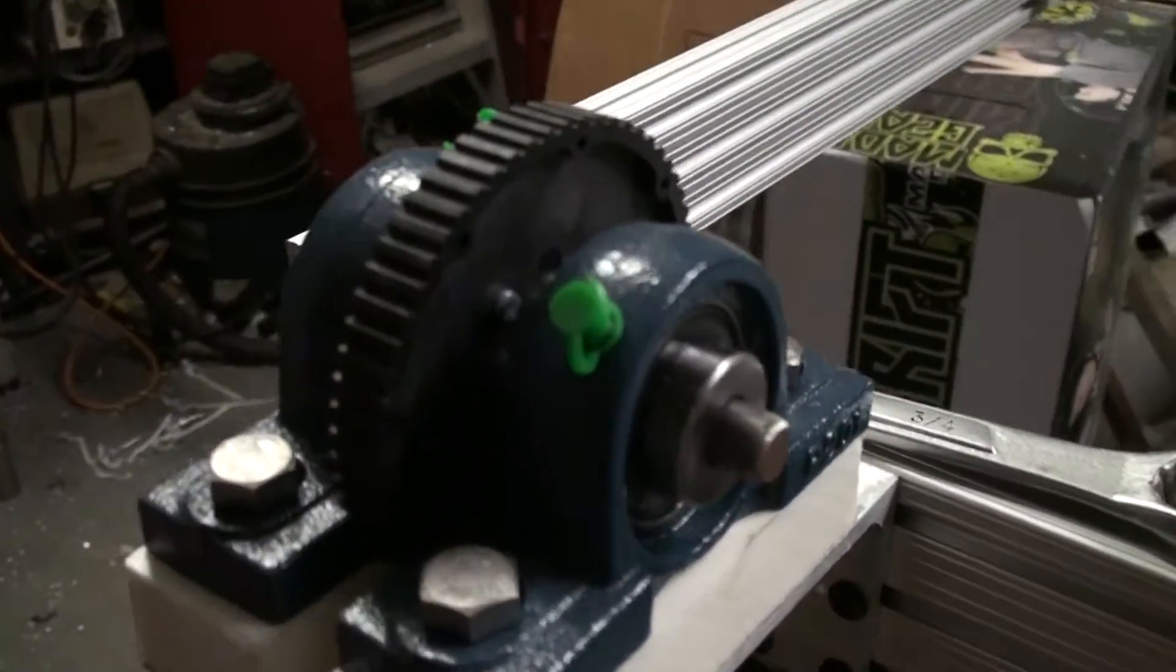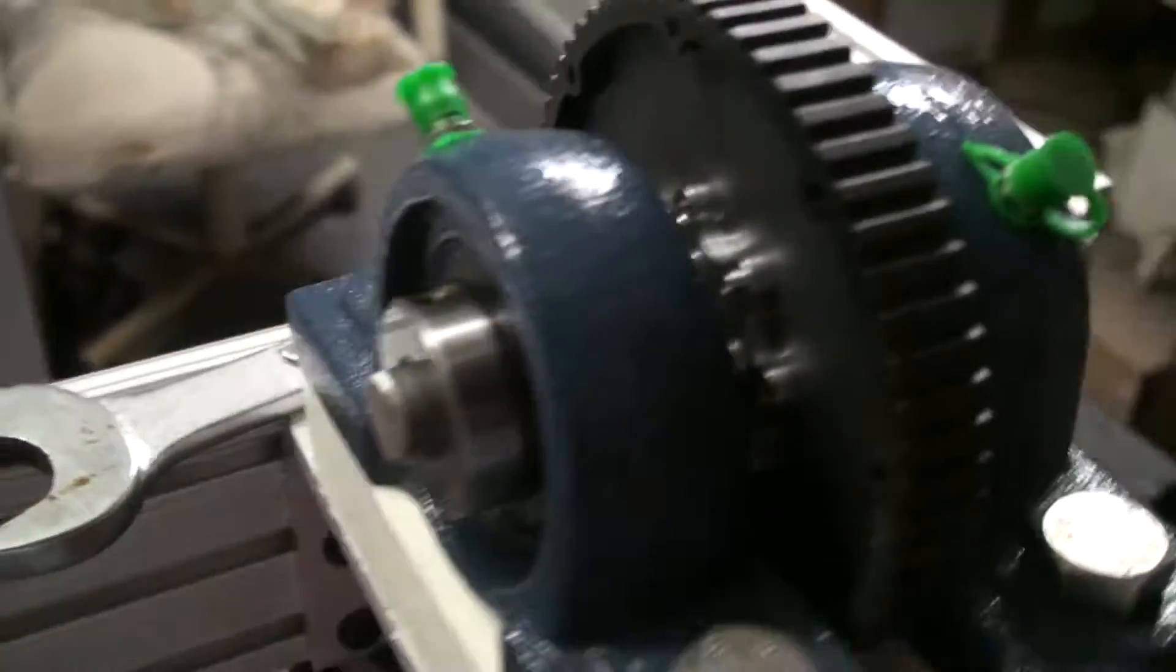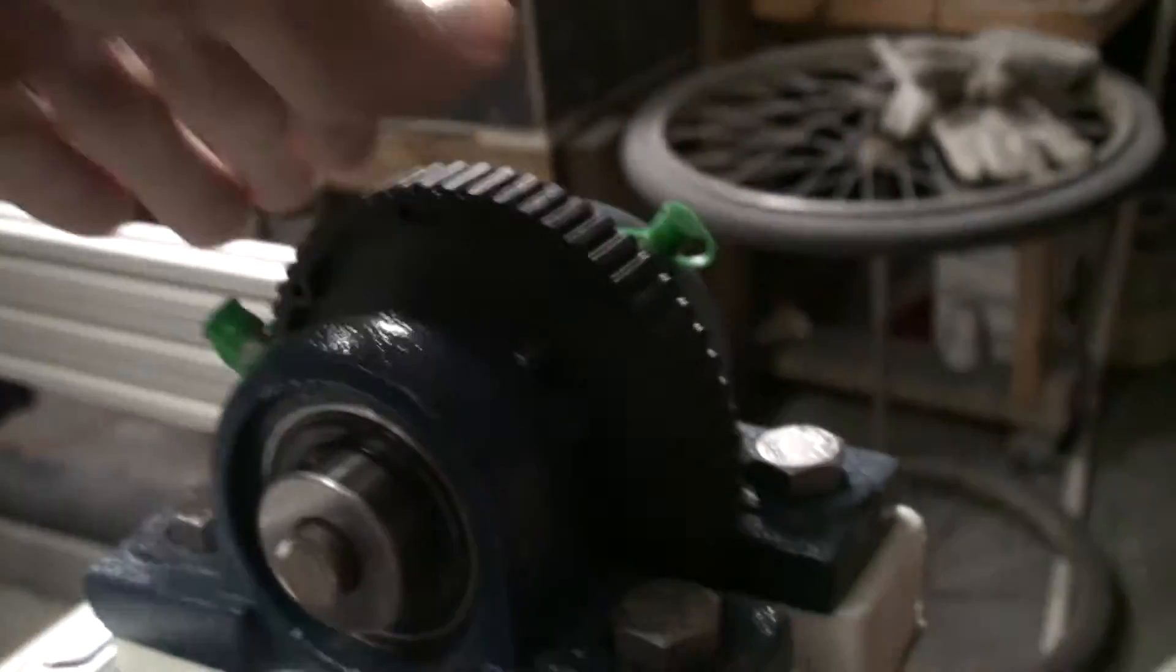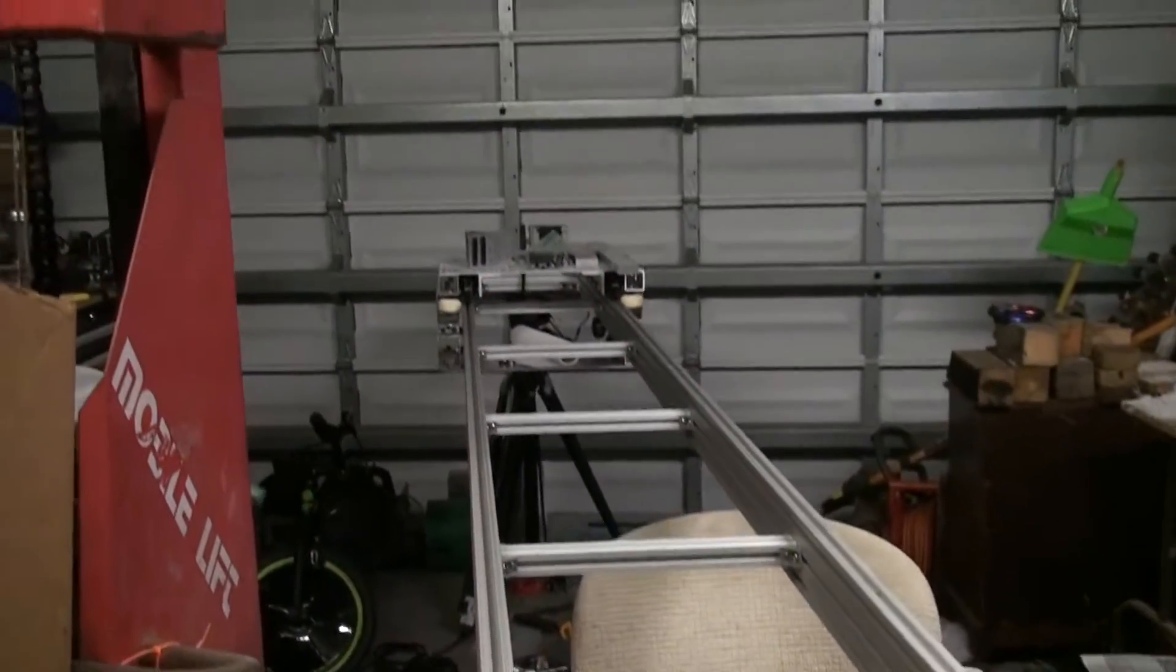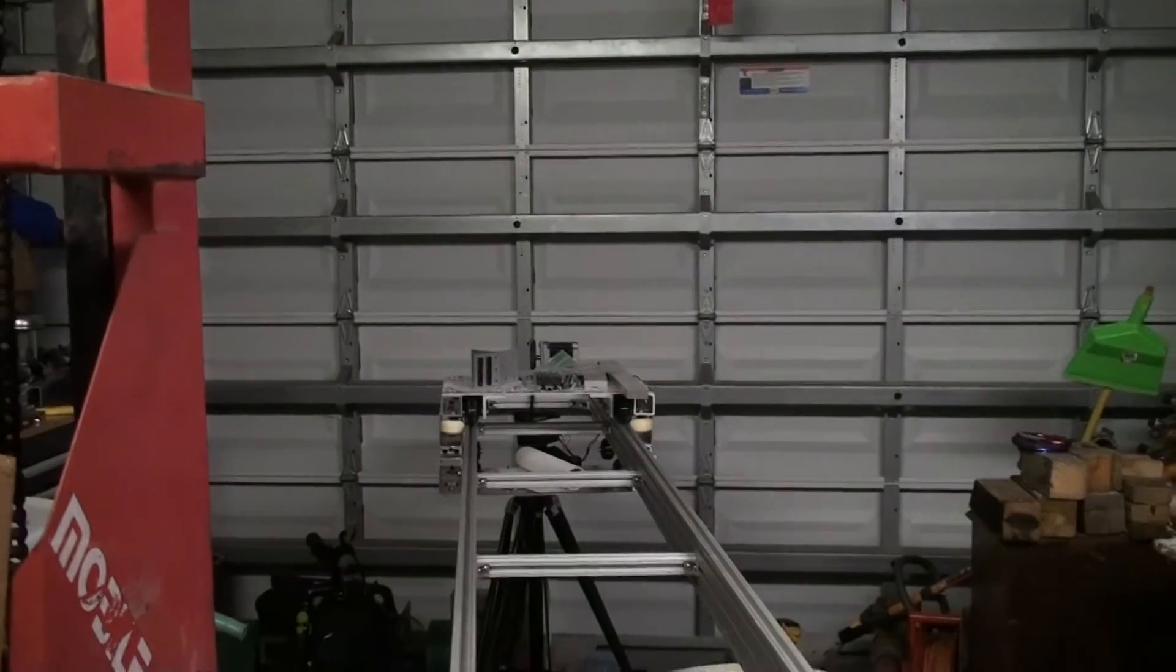This is an idler pulley that goes at one end of the dolly. It just freewheels on these bearings and the belt goes in a big loop between this and a motorized pulley at the far end of the track.